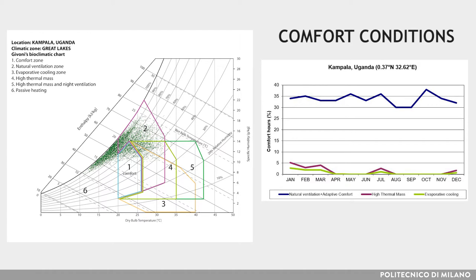Daytime temperatures are rather similar to the hot-humid coastal zone, but nights may be uncomfortably cold for some periods of the year. Due to the high altitude of Lake Victoria, early mornings may be uncomfortably cold during the cold season and the rains. Therefore, complete sun exclusion is not desirable in this area, whereas in other parts of the zone, sun exclusion is required.